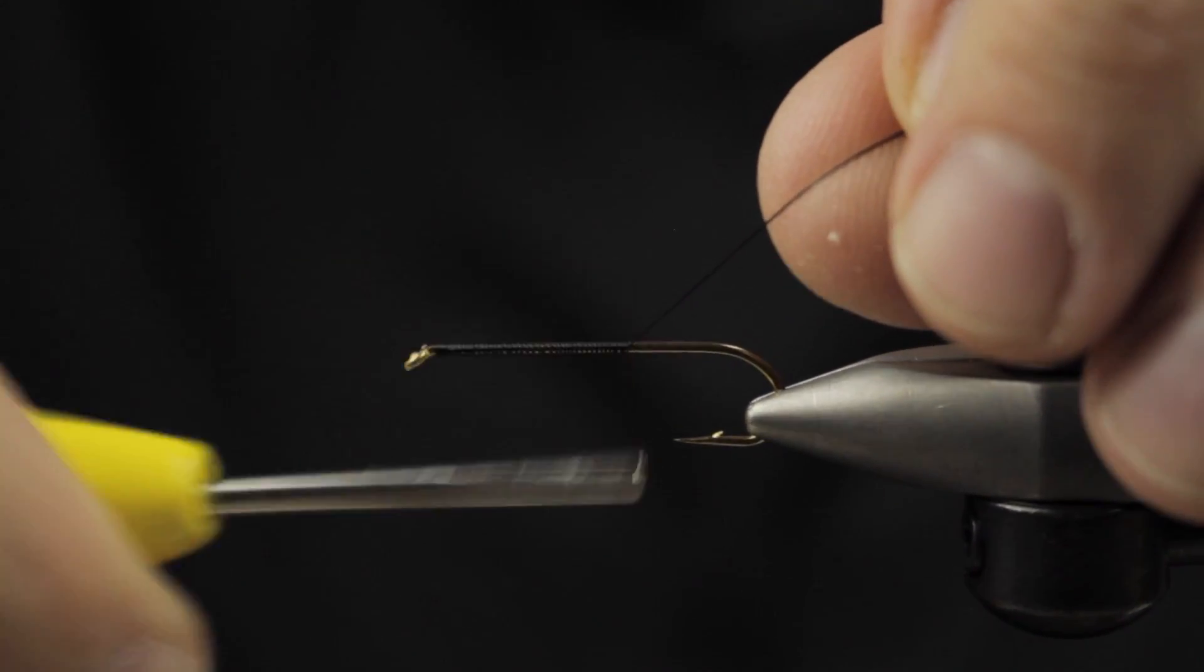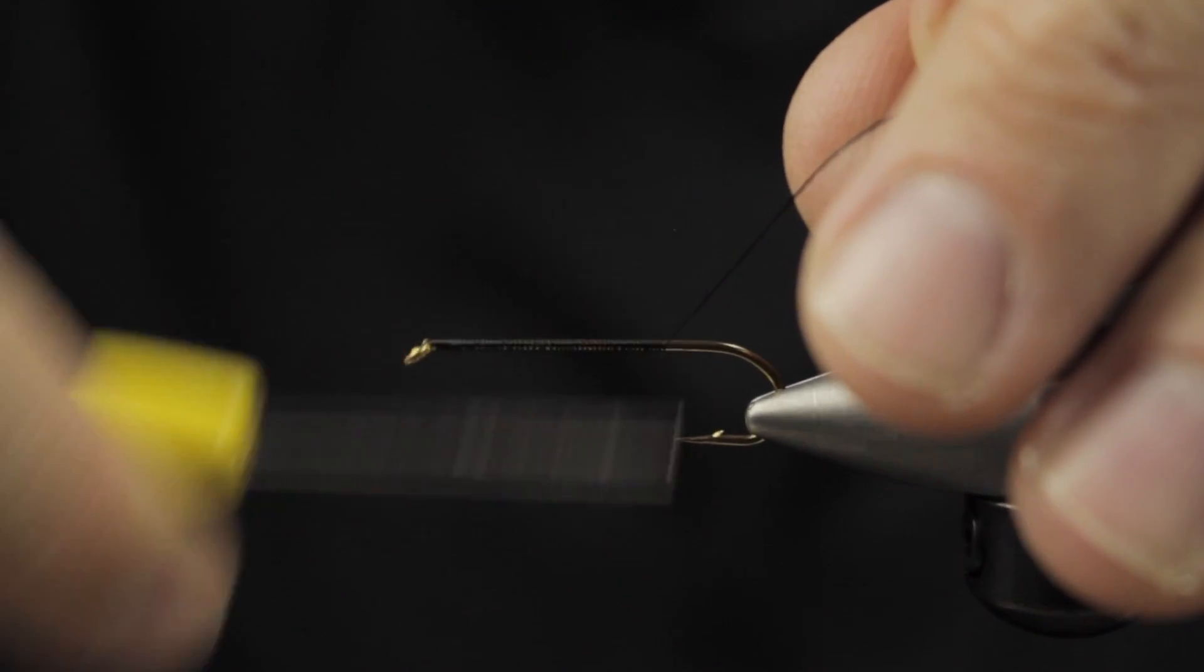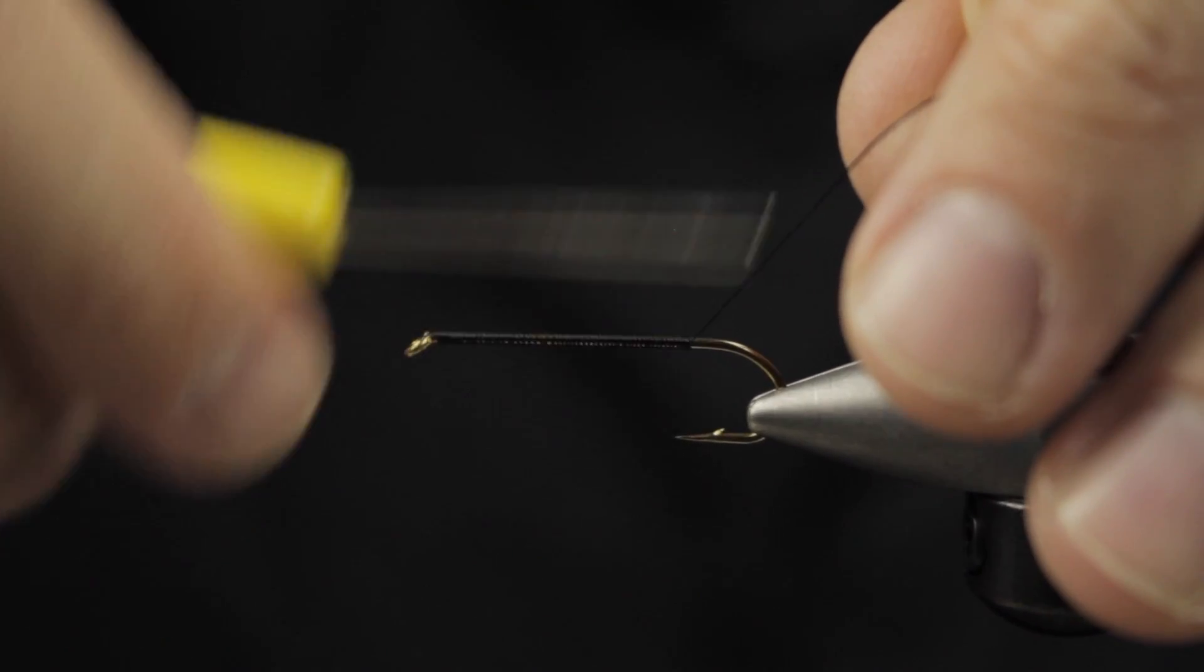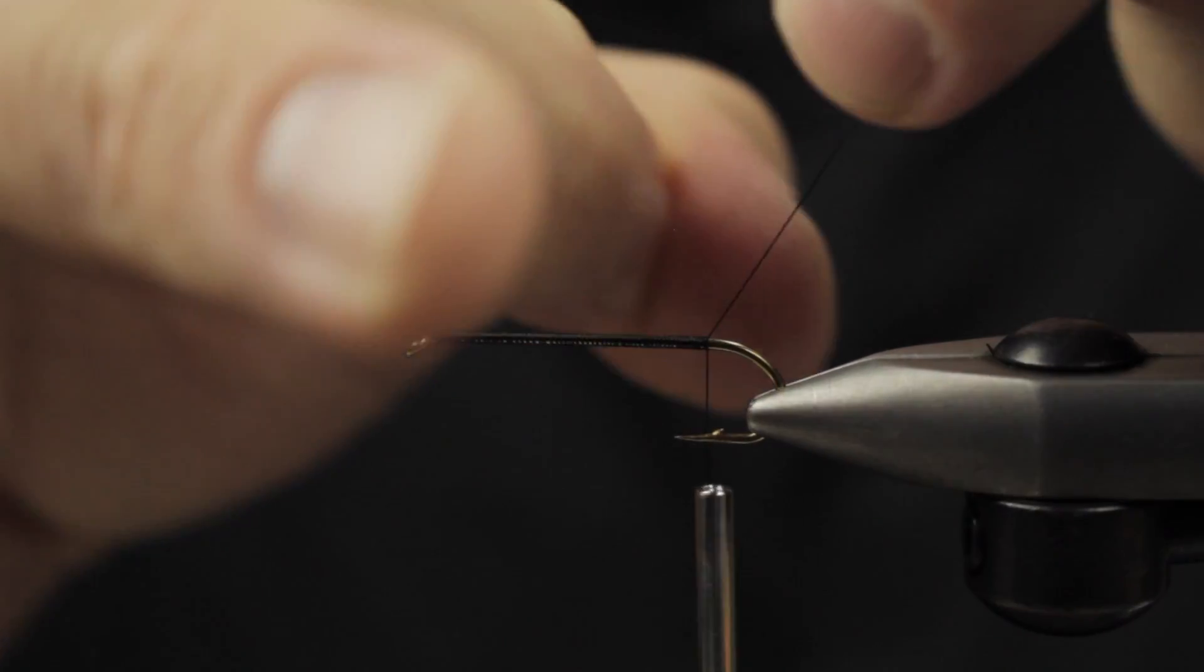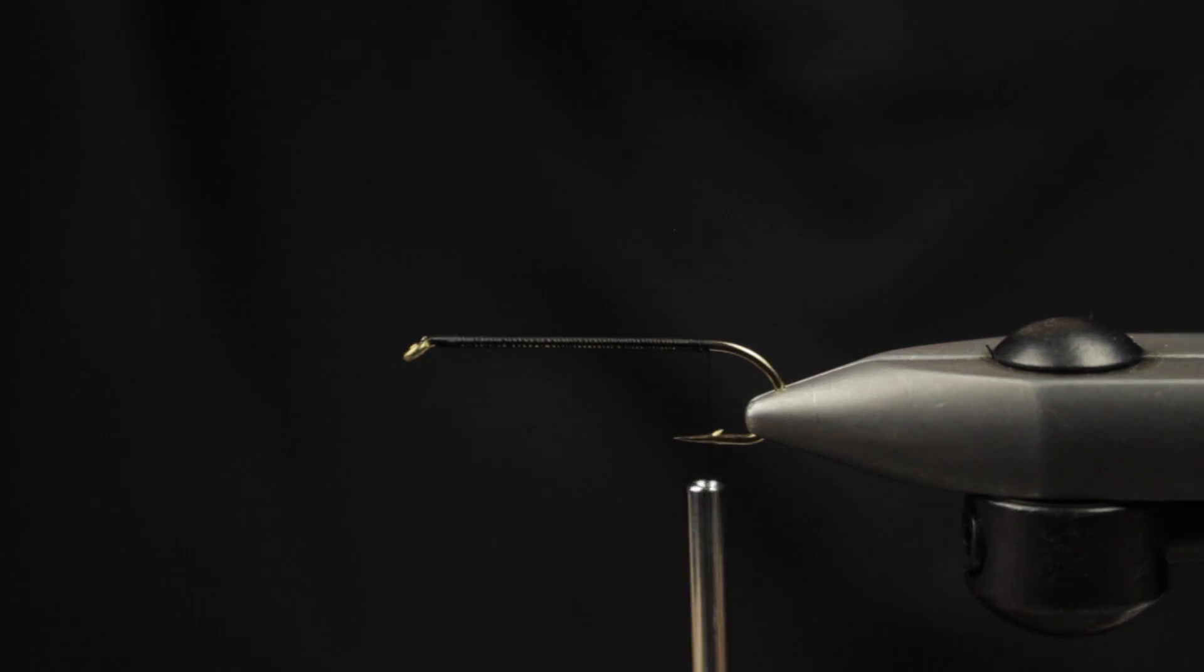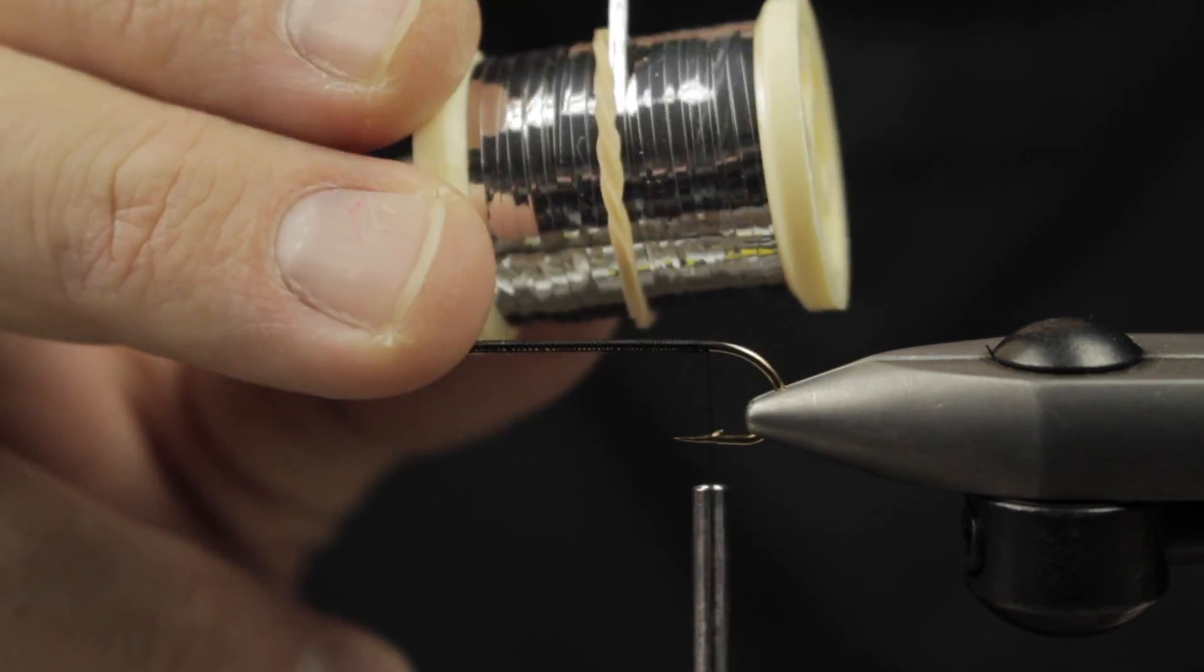We're going to start out doing connecting turns all the way down the shank of the hook. Once we get about in between the point and the barb, we'll go ahead and terminate our wraps back.